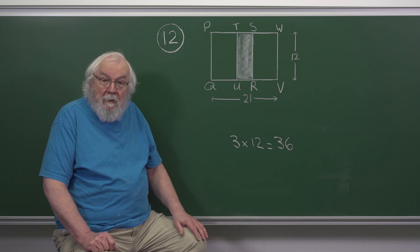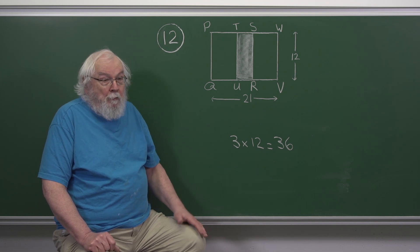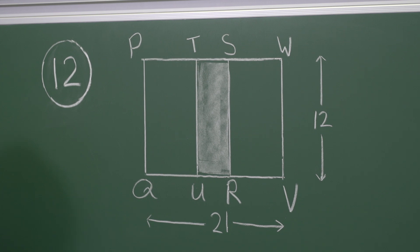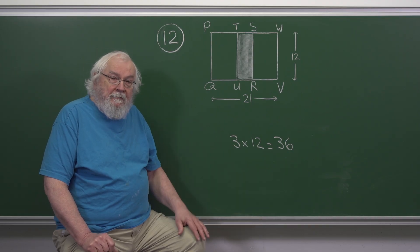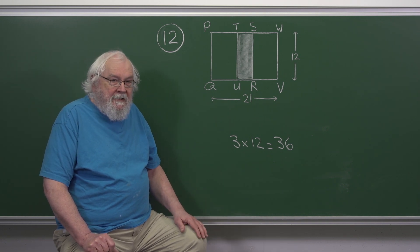However, we're given with this overlap that the total width is 21. So the right-hand square has been moved to the left by 3 centimeters.